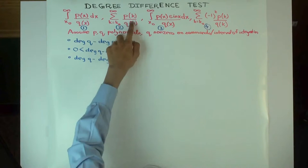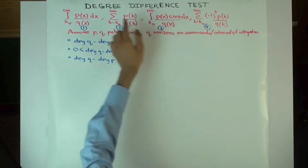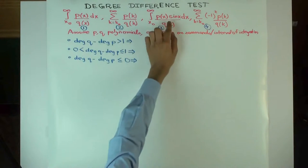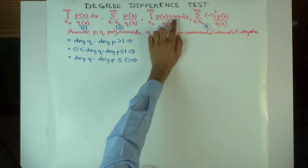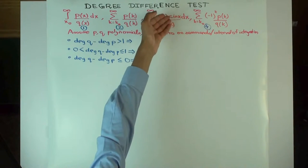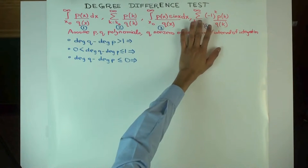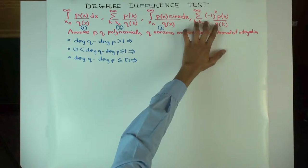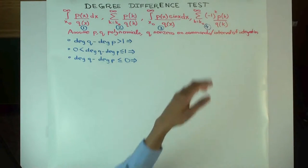Again, we assume the denominator is not zero at any of the integers from k-naught onward. The third type is like the first integration, except we multiply by sine x, which creates oscillation in the function — the rational function multiplied by sine x oscillates between minus 1 and 1. The corresponding thing for summations would be multiplying by (-1)^k, so it would have an alternating sign.